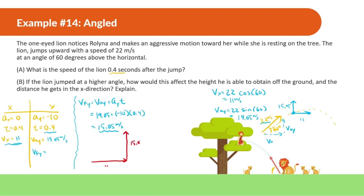We have 11 meters per second in x and 15.05 meters per second in y. The overall speed is the hypotenuse, so we use the Pythagorean Theorem: speed equals the square root of 11 squared plus 15.05 squared, which gives 18.64 meters per second. That's how fast the lion is going after 0.4 seconds.